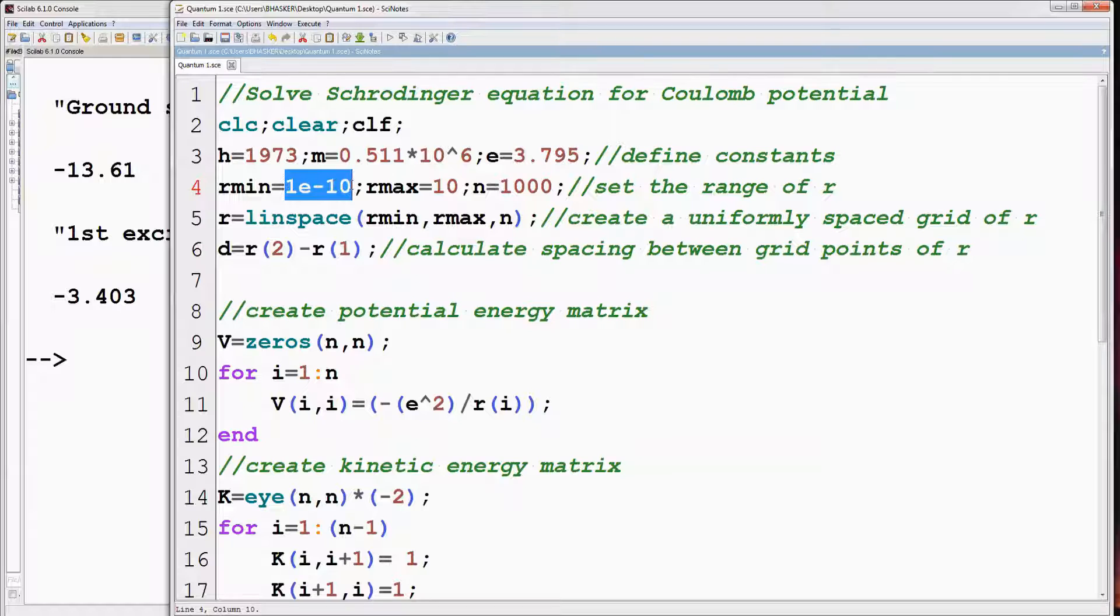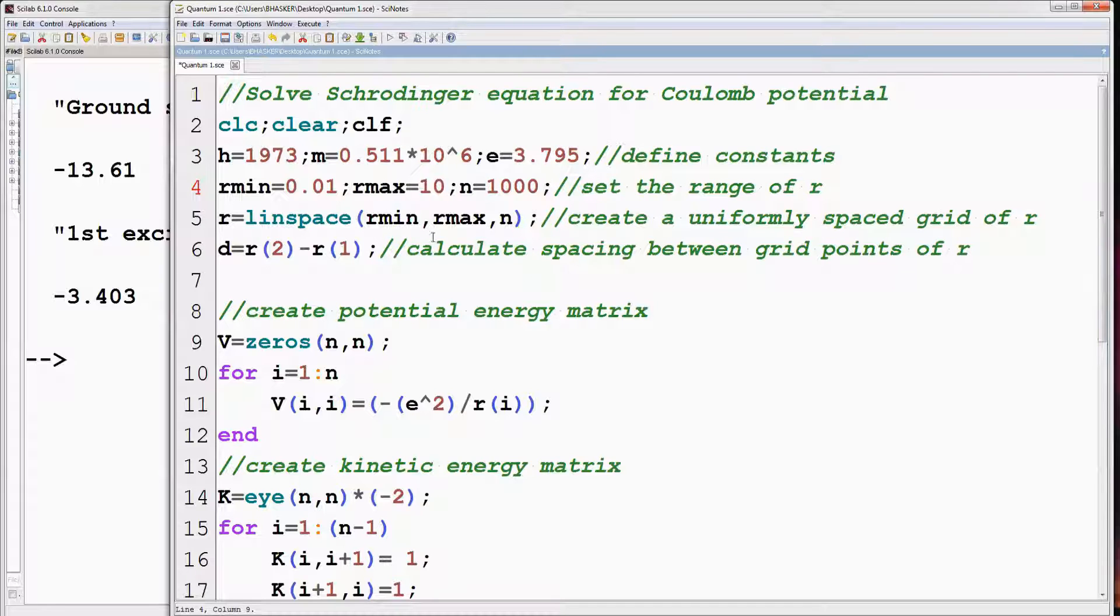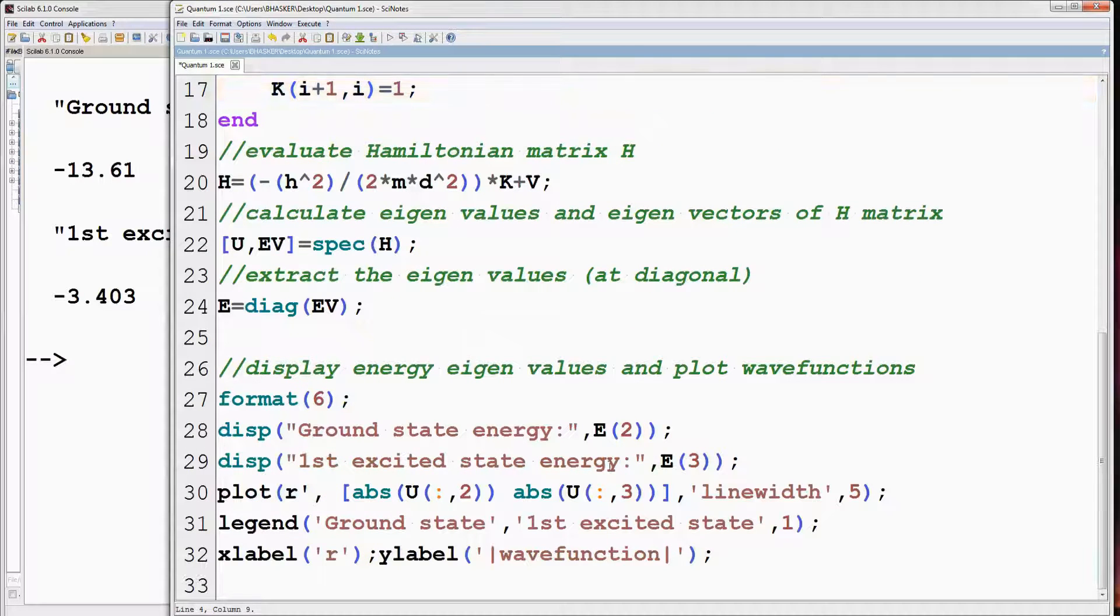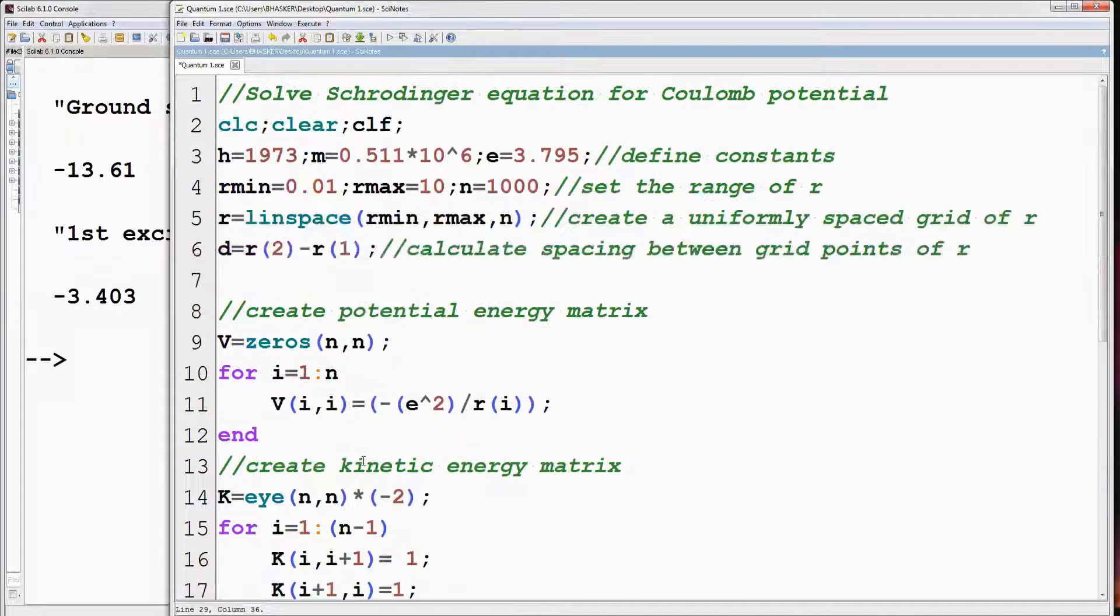So if we change r min to say 0.01, then first column of u will be the ground state wave function and second column will be the first excited state wave function without any erratic behavior. So is the case with energy. The first element of e will be the ground state energy and second element will be the first excited state energy. Run the program.